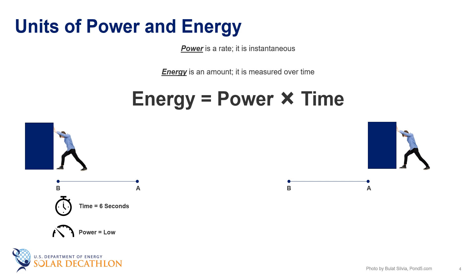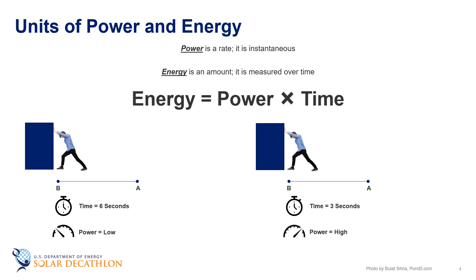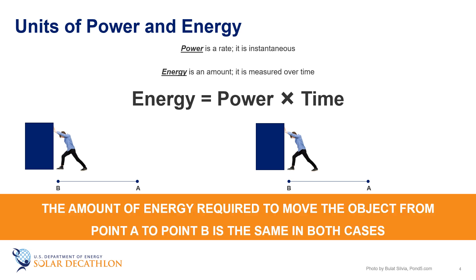To move an object from point A to point B faster requires more power. In other words, power is the rate at which energy is used. But again in the two examples we've shown here, it doesn't matter if the action occurs slowly or quickly. The amount of energy that is required to move the object from point A to point B is the same in both cases.